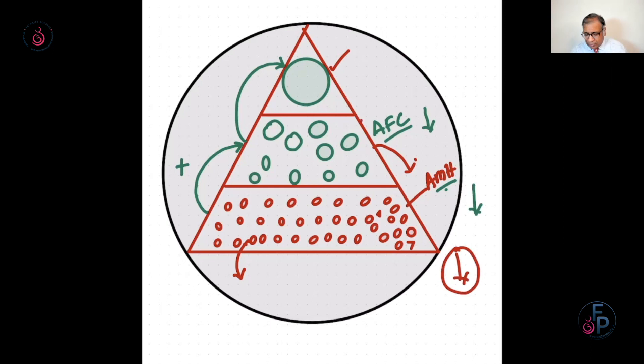The second thing that happens is as your AMH declines, more follicles start getting released into the antral follicle region. So what is the role of AMH? The AMH's role is inhibitory. It holds follicles back. Why? Because you don't want to lose everything. But as women age, its inhibition role starts declining and more follicles come into the antral follicle zone.